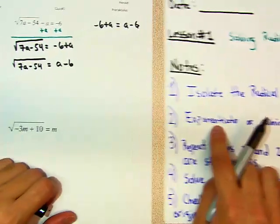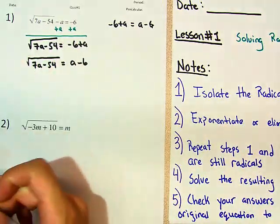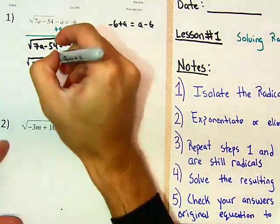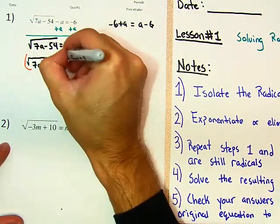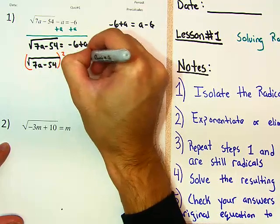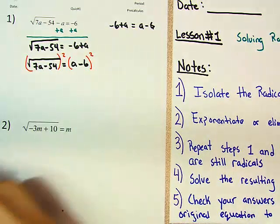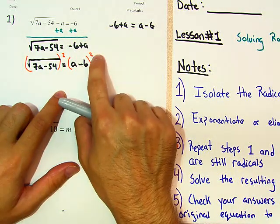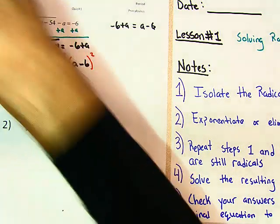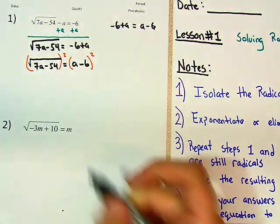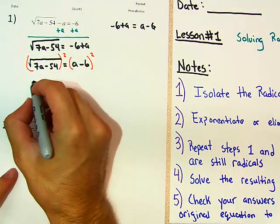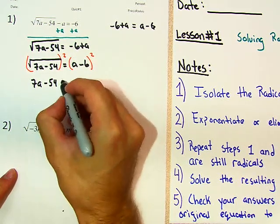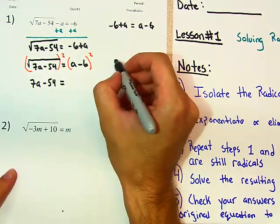When we exponentiate here, this is square root, so what are we going to do to both sides? We're going to square both sides. And now here, a minus 6 is nicer to square than negative 6 plus a. But then what happens? This cancels. So I have 7a minus 54 is equal to...